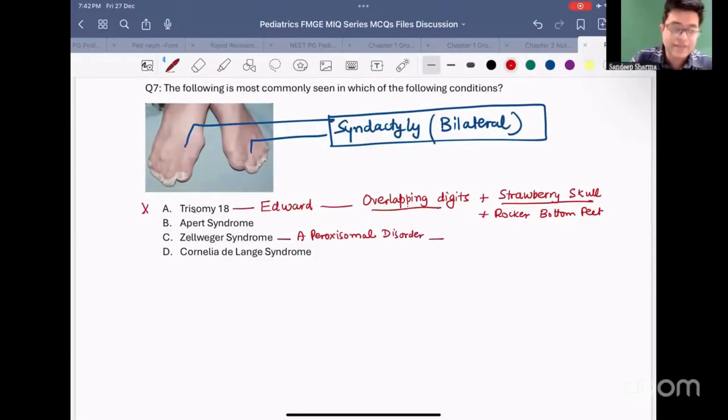Zellweger syndrome is characterized by a group of things. First of all, they have mongoloid slant of eyes. What is mongoloid slant of eyes? Lateral canthus at a higher angle than medial canthus. Just like Down syndrome, they have dysmorphic facies. Down syndrome-like face is found in Zellweger syndrome. Not the same, but similar face is found.